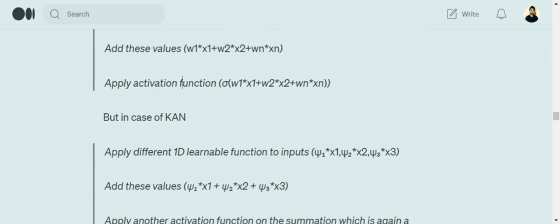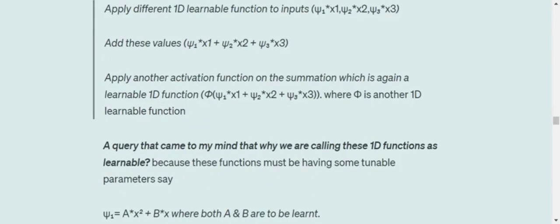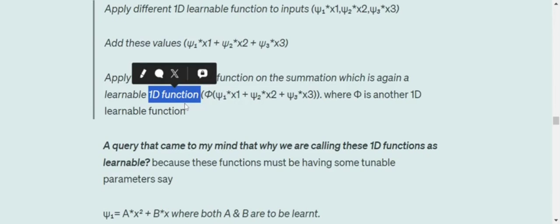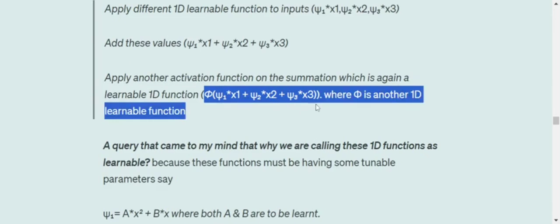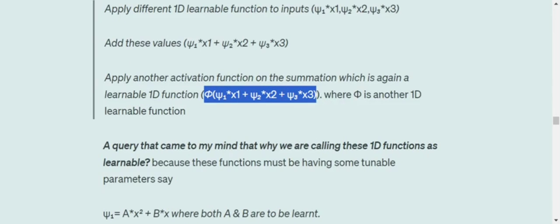So eventually in case of an MLP, the activation functions that we apply are not learnable. These are constant, be it sigmoid, be it ReLU. But in case of KANs, the final activation function that we are applying outside is also learnable in nature. So this is the final equation that we get for every hidden layer. And eventually, this is what it relates from the representation theorem that we explained.